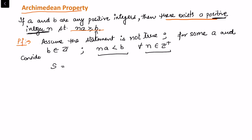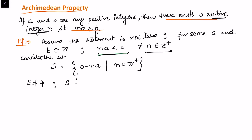We define the set S in a way that gives us positive integers. We consider the elements in the set as b minus na. We can see that S is non-empty because we have assumed na is less than b for every positive integer n, so b minus na is a positive quantity. We can also say that S is a set of positive integers, so we can apply the Well-Ordering Principle.